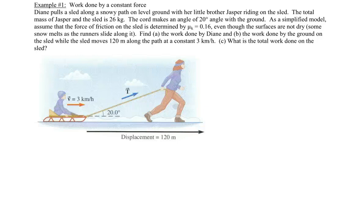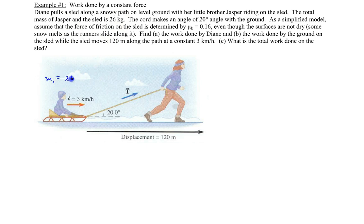Welcome to example number one. It's a question involving calculating the work done by a constant force. As you can see in the picture, we can see a girl named Diane that is pulling a boy, her little brother, on a sled. The mass of Jasper and his sled, which we'll write as m1, is 26 kilograms.